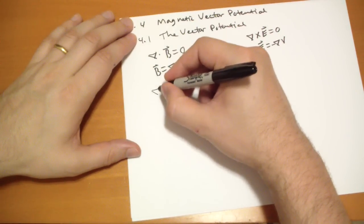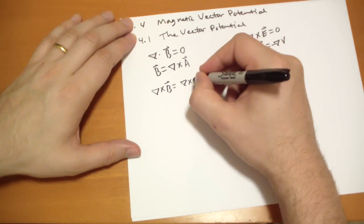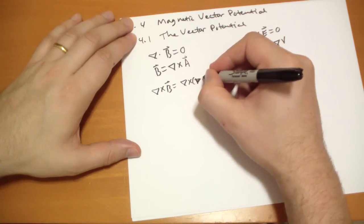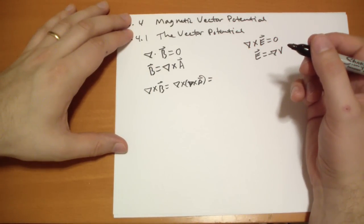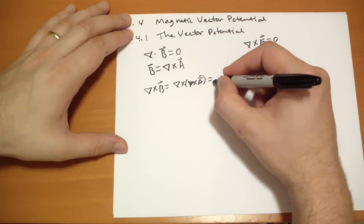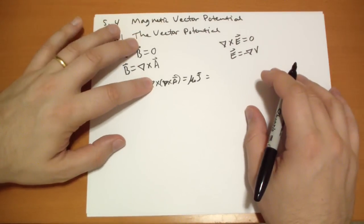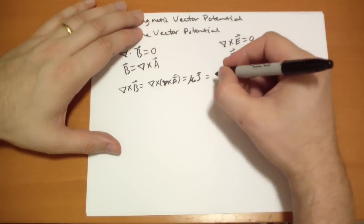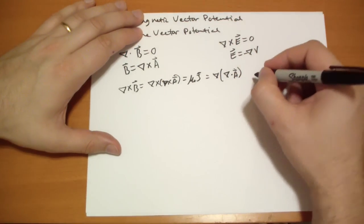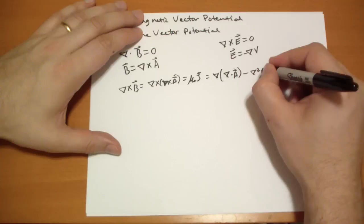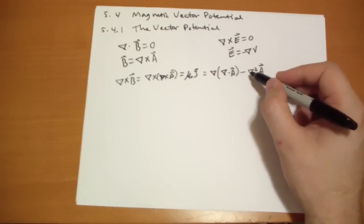So basically, the curl of B, which is the curl of the curl of A, that is equal to μ₀j. And using the curl of a curl, you get, that's the gradient of the divergence of the A vector, minus the Laplacian of the A vector. And this isn't the scalar Laplacian, this is the vector Laplacian.